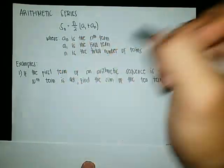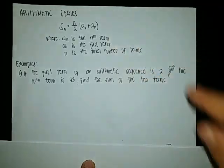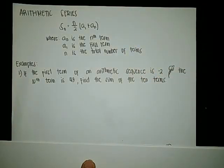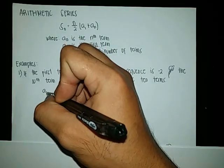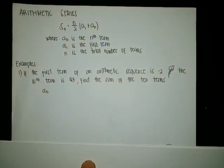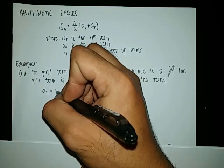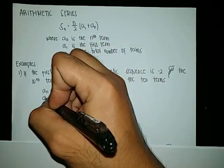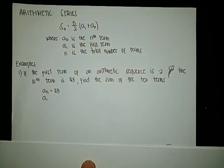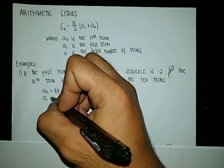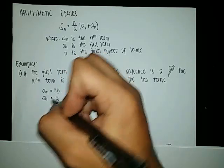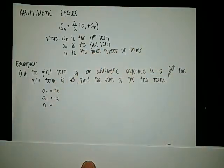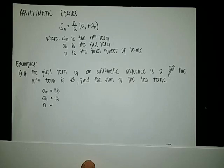First, let us identify A sub n, A sub 1, and n. Our A sub n, which is the nth term, is 43. A sub 1, the first term, is negative 2. And our n, the total number of terms, is 10 — since we are finding the sum of 10 terms.